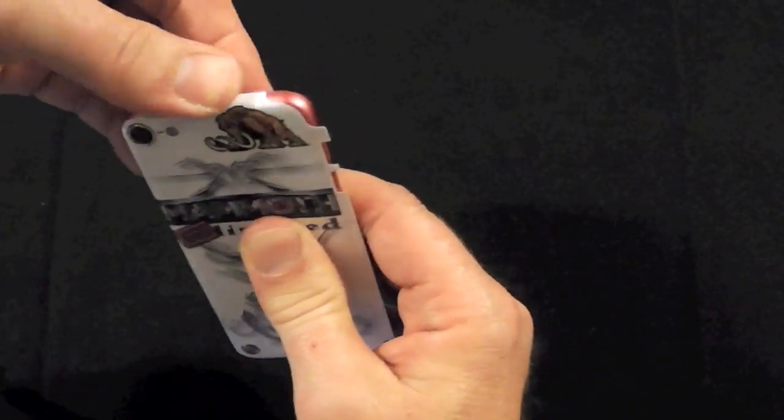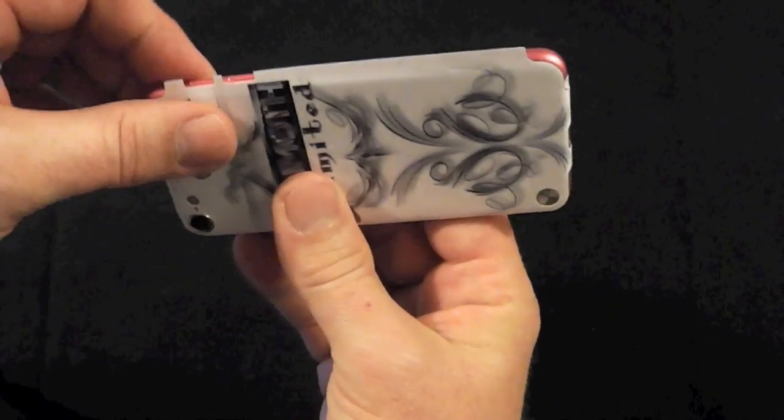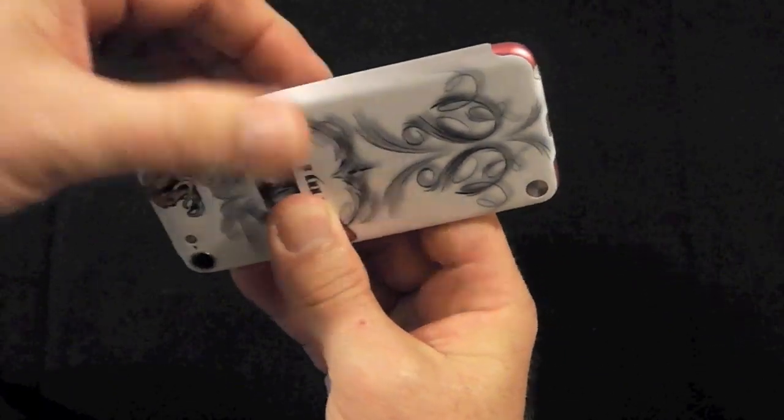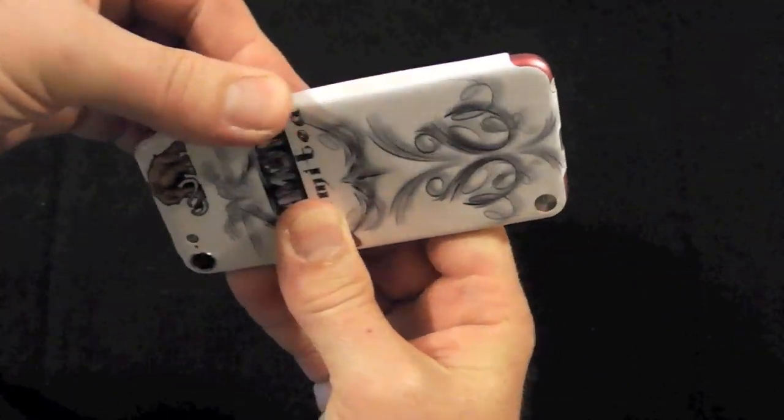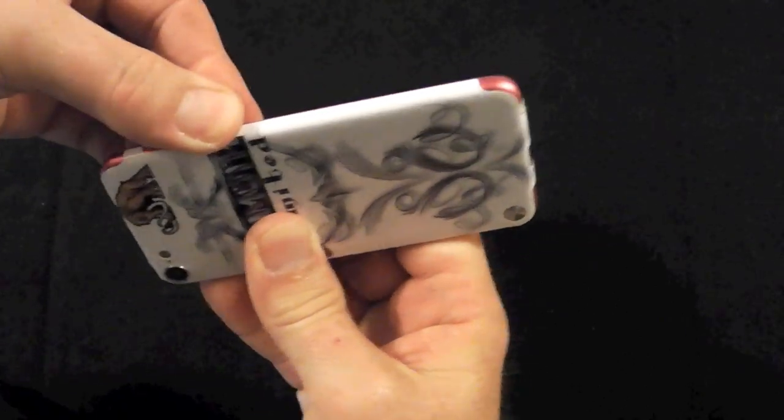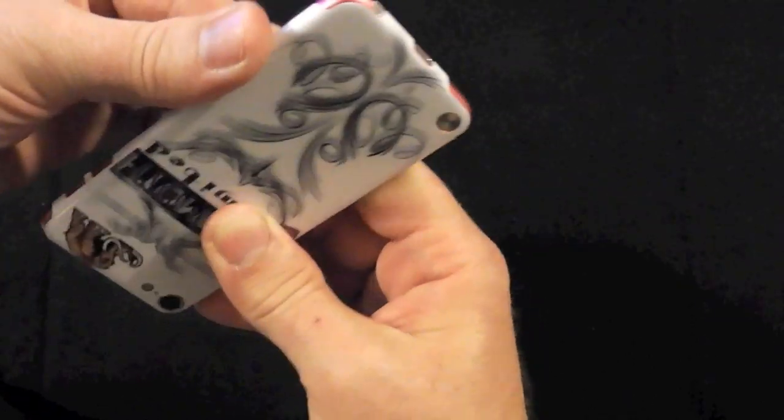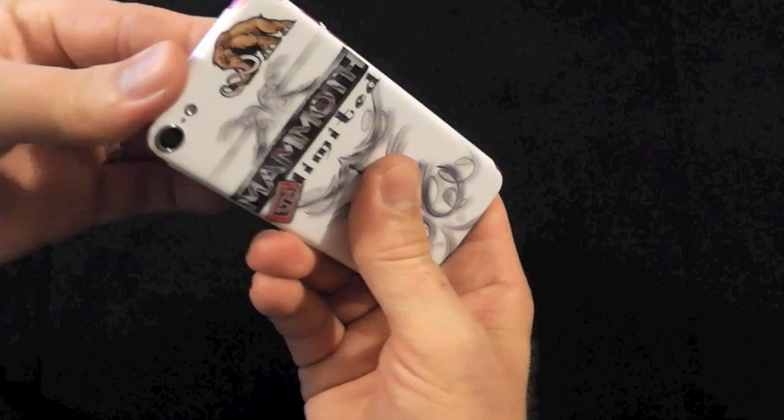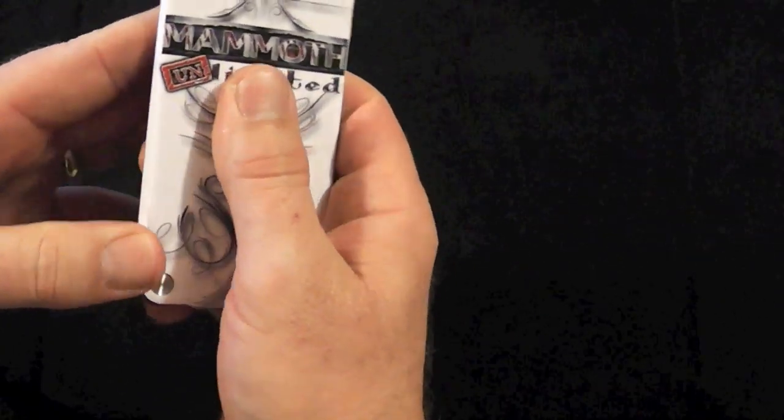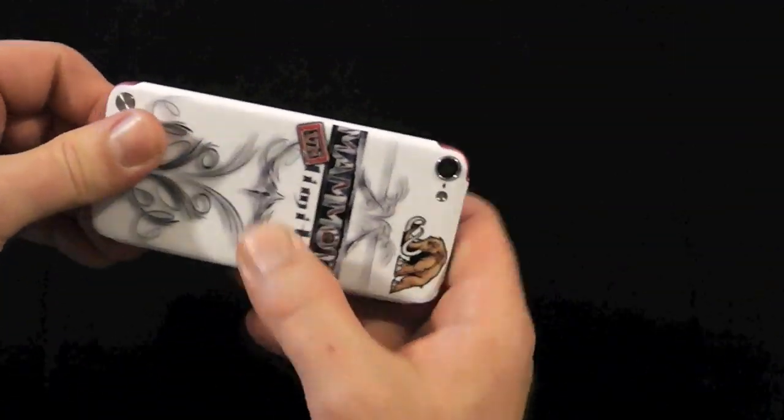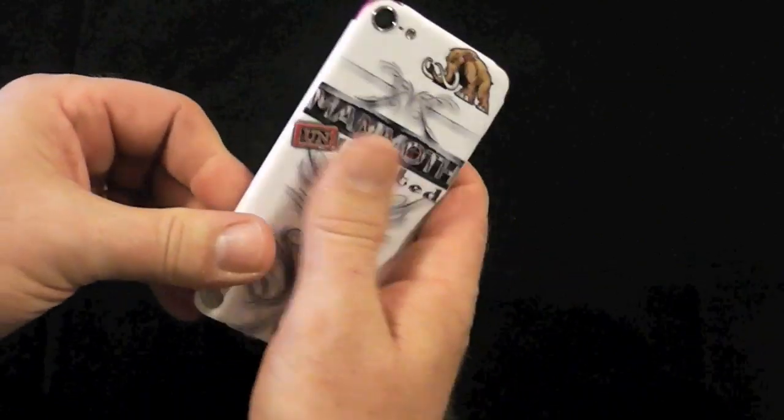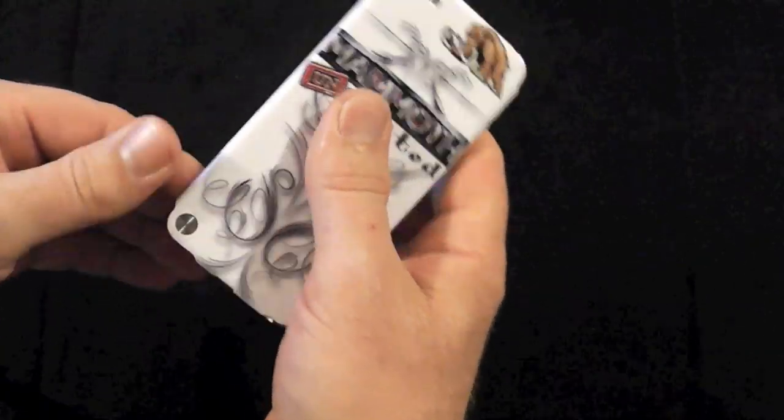And we're going to fold the top, then the side. Okay, once you get your skin on, just go over it real good and add firm pressure, because that's kind of what really locks it on the device.